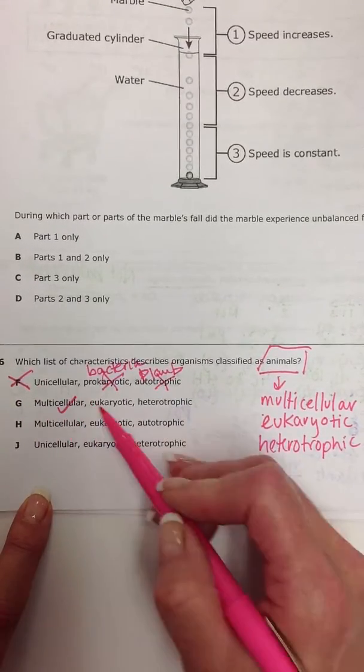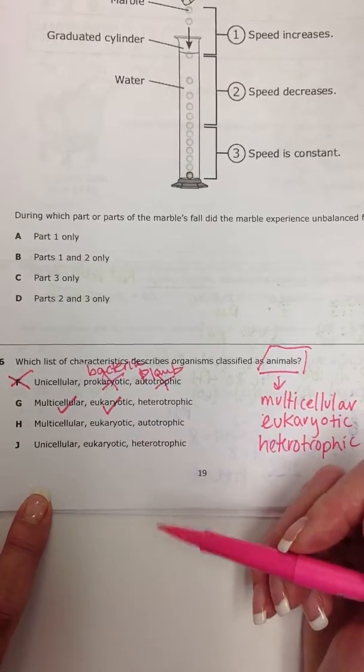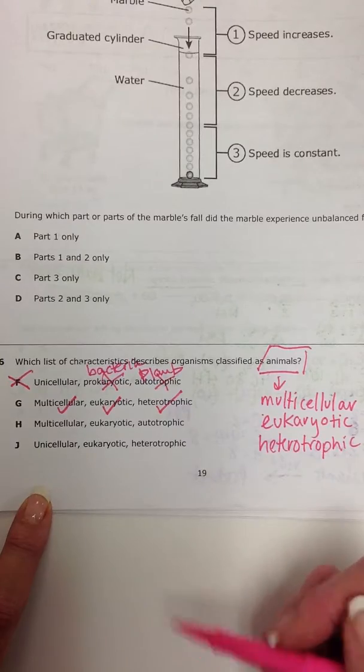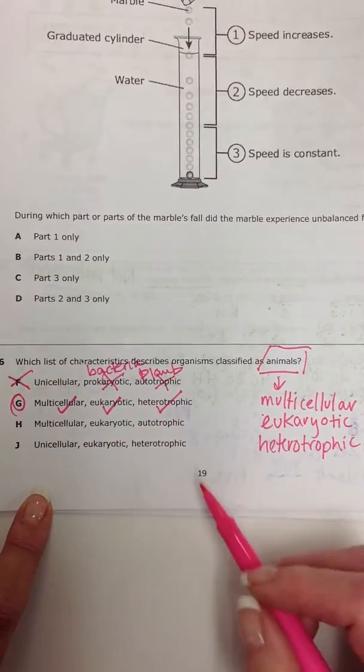Multicellular, yes, we are. Eukaryotic, we have a nucleus in our cells. Yes, we do. And heterotrophic, we eat other organisms to get our energy. That looks good. Let's check the rest.